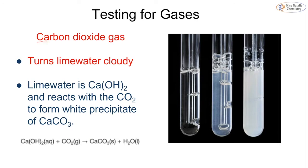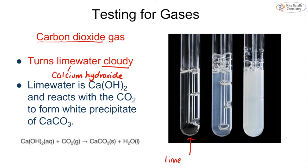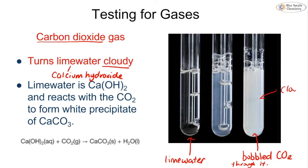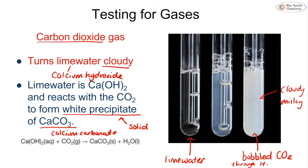To test for carbon dioxide we add lime water, which is calcium hydroxide. The calcium hydroxide will turn cloudy if carbon dioxide is present. You can see the lime water on its own compared to when CO2 has been bubbled through it — it goes a cloudy or milky colour because we are forming a precipitate of calcium carbonate. If asked, say you add lime water and it will go cloudy.